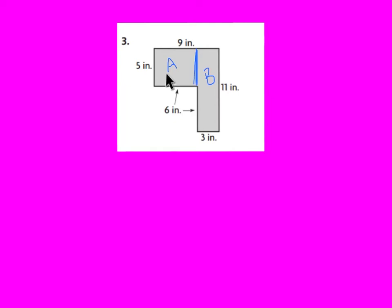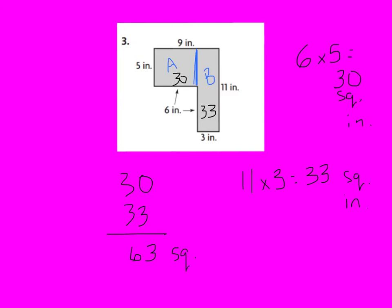Now I'm going to solve for this first rectangle. My base is 6 inches, my height is 5. So 6 times 5 equals 30 square inches. For rectangle B I have 3 as my base and 11 for my height. My rule for 11s is you just double that digit. 11 times 3 equals 33 square inches. We add our 2 totals: 30 plus 33 equals 63. We got the exact same answer doing it two different ways.